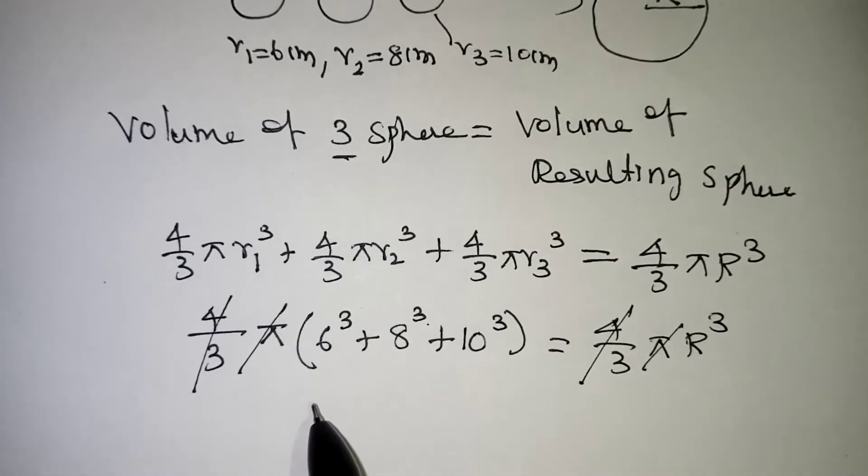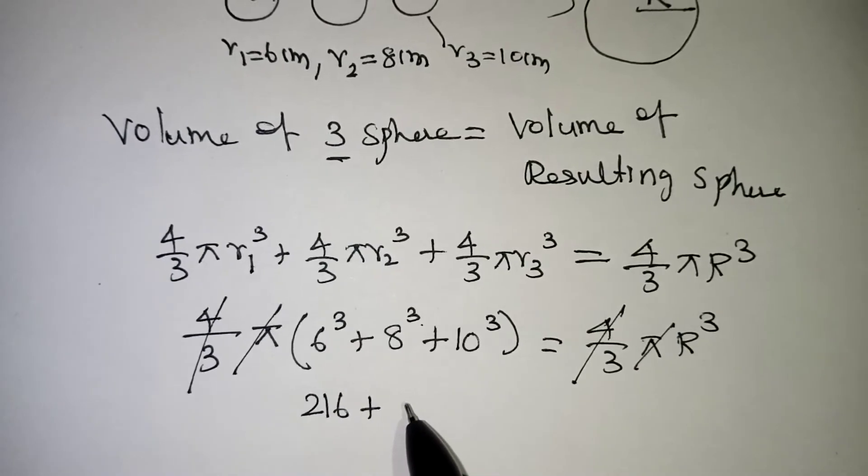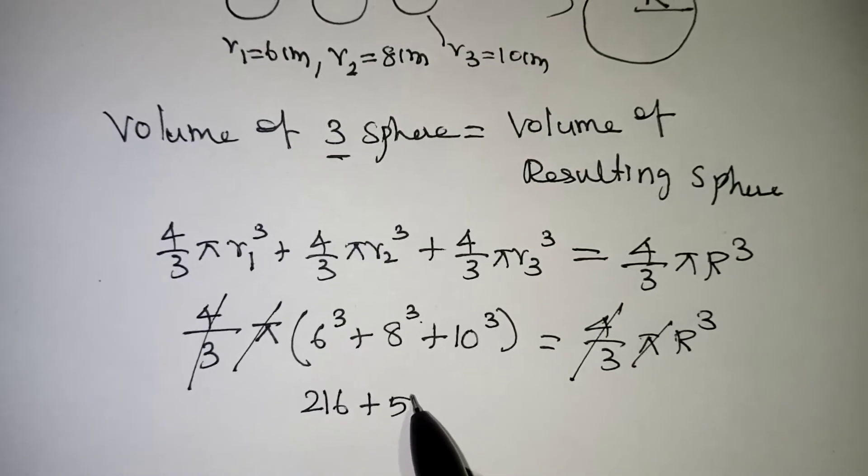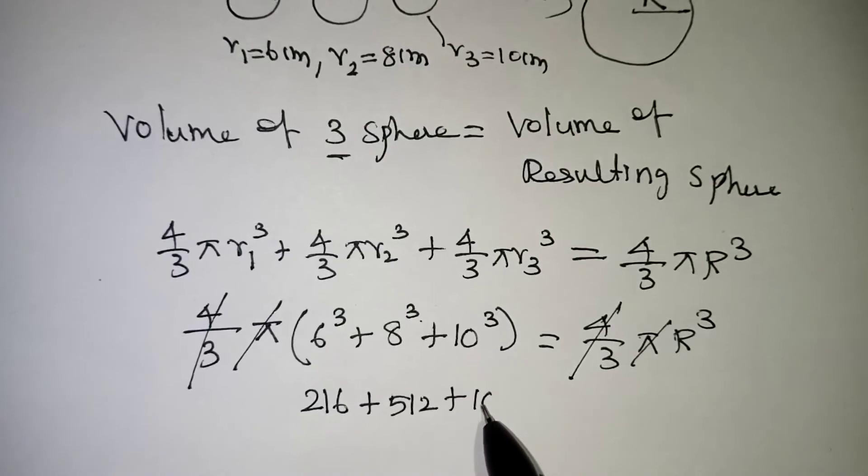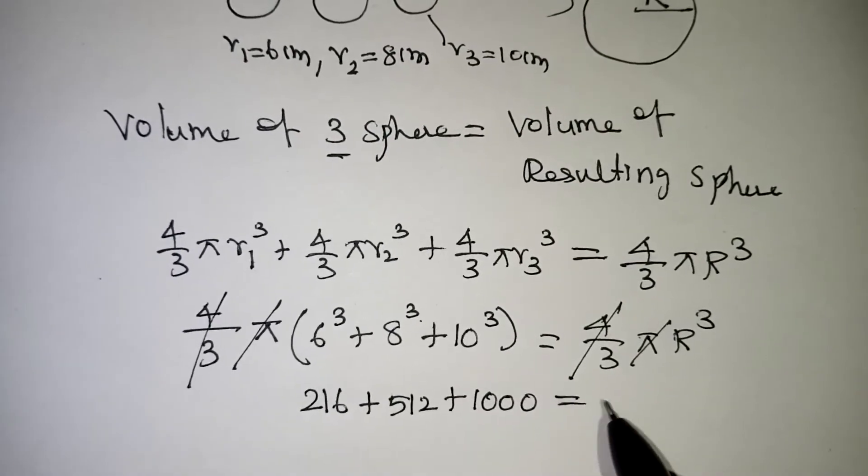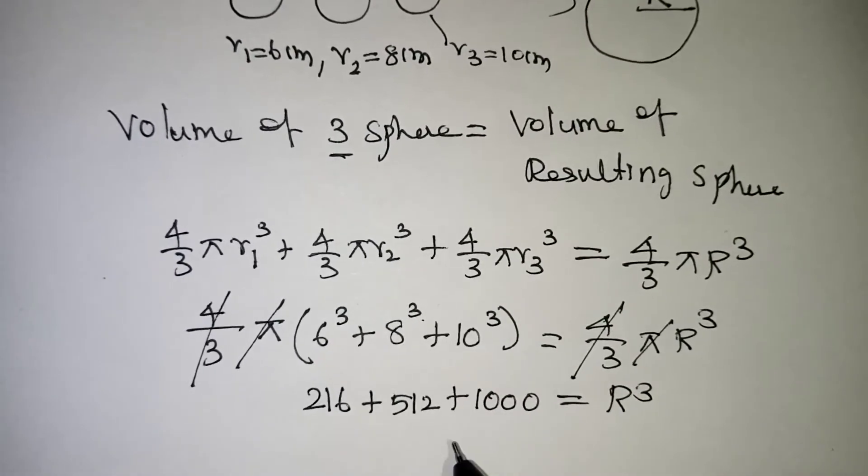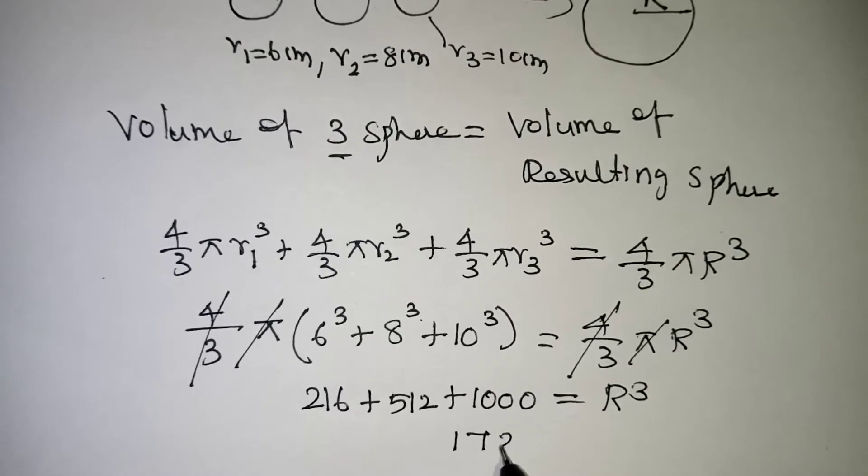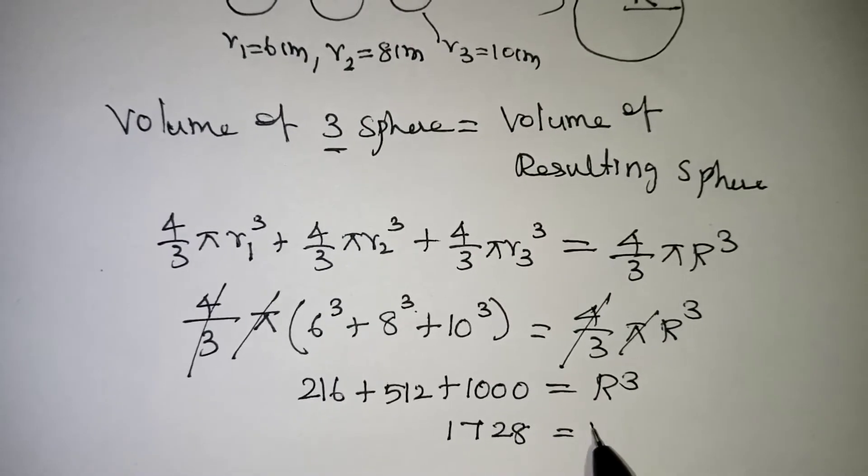6 cube: 6 into 6 into 6 is 216. 8 cube: 8 into 8 into 8 is 512. 10 cube: 10 into 10 into 10 will give you 1000, will be equal to capital R cube. If you are adding we are getting 1728, that is your capital R cube.